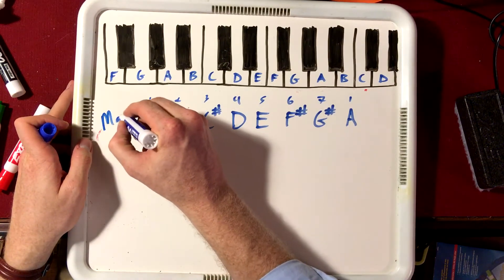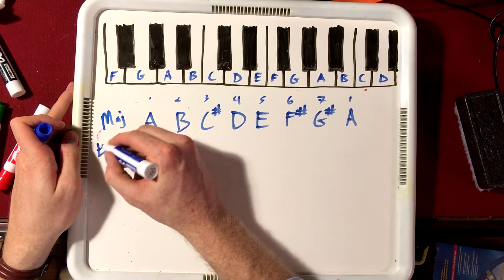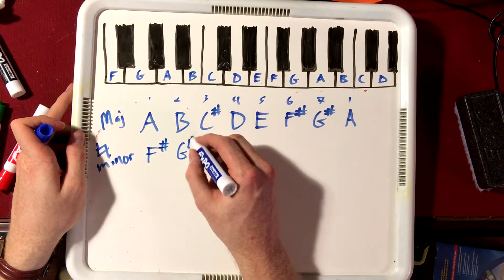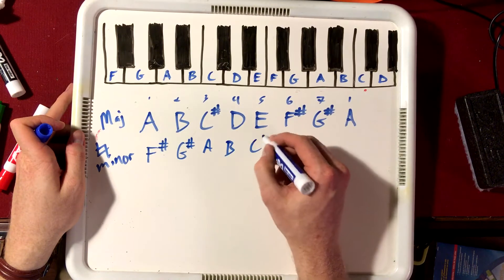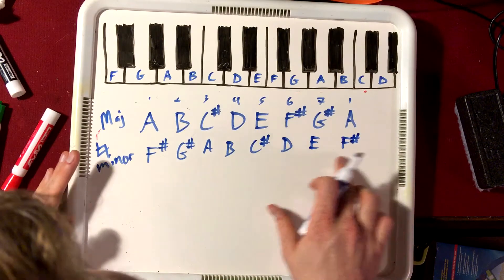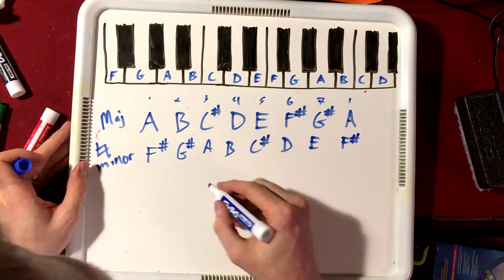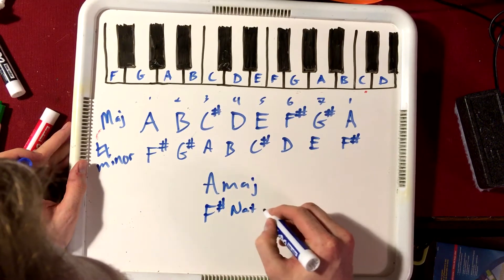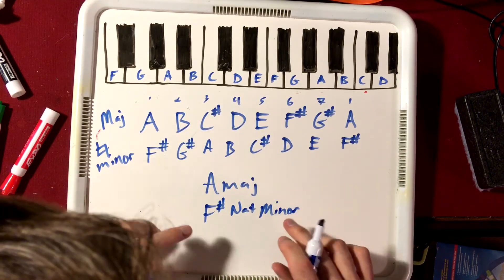So here's our major. Here's our major scale. And then here's our natural minor scale. That's going to be F sharp, G sharp, A, B, C sharp, D, E, and then back to our starting point, F sharp. Here's our natural minor scale. So here's our A major scale and F sharp natural minor are the same notes.